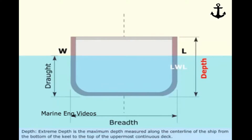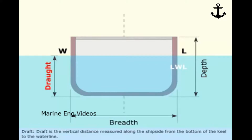Draft is the vertical distance measured along the ship side from the bottom of the keel to the waterline. Depth is the vertical distance measured at midship along the ship side from the bottom of the keel to the upper edge of the summer load line.